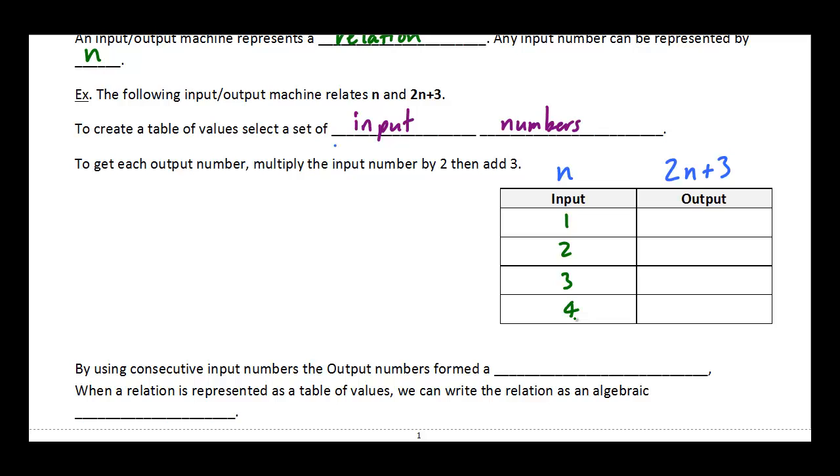To get the output number for each given input number, I just have to multiply it by 2 and then add 3. So if my input is 1, my output is going to be 2 times 1 plus 3, which is 2 plus 3, which is 5. If my input is 2, it's 2 times 2 plus 3, which is 4 plus 3, which is 7. If my input is 3, 2 times 3 plus 3, which is 6 plus 3, which is 9. And for the last one, 2 times 4 plus 3, which is 8 plus 3, which is 11. So I can fill out my table of values.